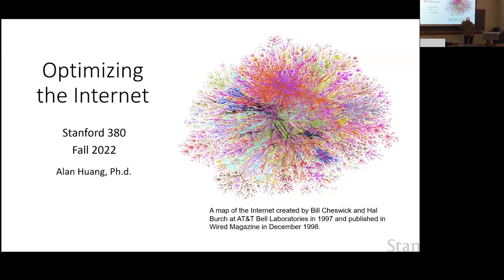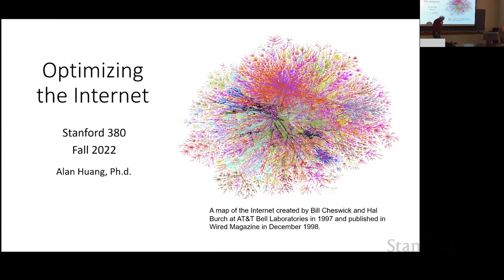My name is Alan Huang. People in the room can vouch that I'm live — I have my official Zoom formal sweatshirt, but since we're actually doing the camera here, I'm actually wearing pants too. After Stanford I got my PhD in EE, then joined AT&T Bell Laboratories as a researcher. My field is computer networking and optical communications.